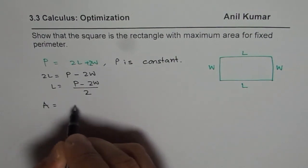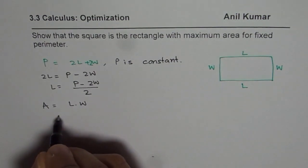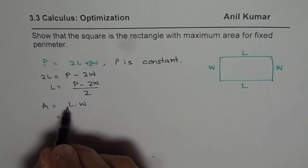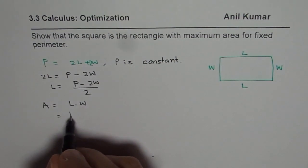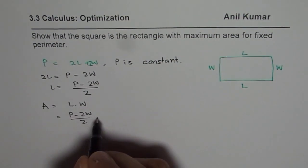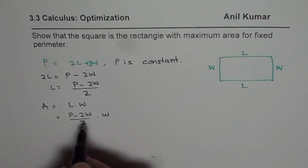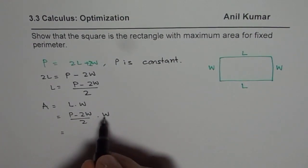Area is length times width. So now we know length in terms of width will substitute P minus 2W over 2 for length times width.